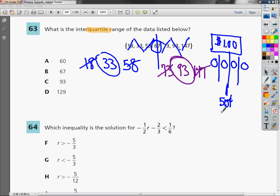So to find my interquartile range, all I need to do is subtract 33 from 93. So my interquartile range value is 60.